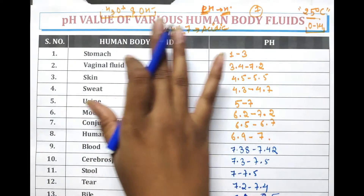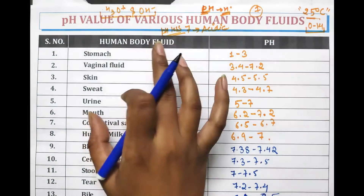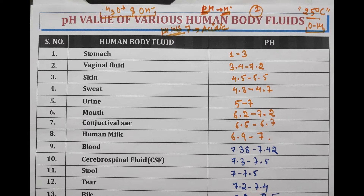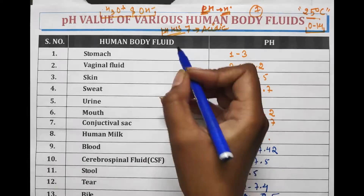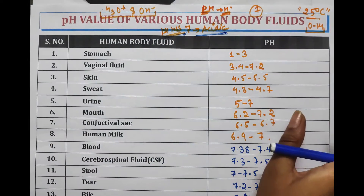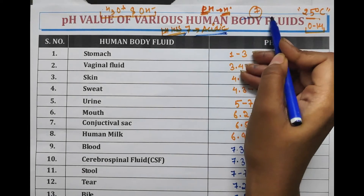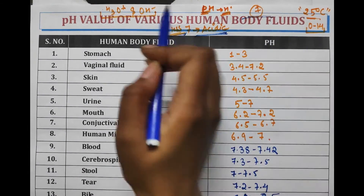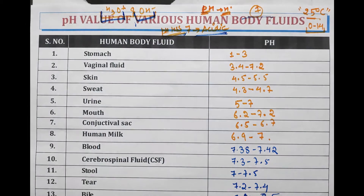Today we have discussed the pH values of various human body fluids. pH is a measurement of hydrogen ion concentration which helps in measuring the level of acidity or alkalinity present in a substance. The pH scale is basically used to specify how acidic or basic a water-based solution is. Oil or oil-based solutions have no pH range. Substances with pH less than 7 are acidic, more than 7 are basic, and equal to 7 are neutral — because hydronium ions and hydroxide ions are present in equal concentration.